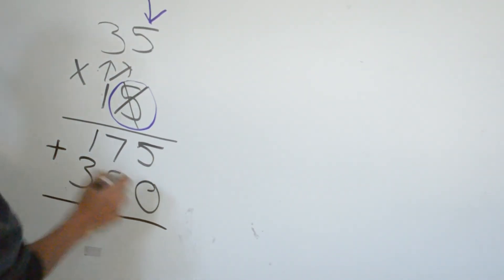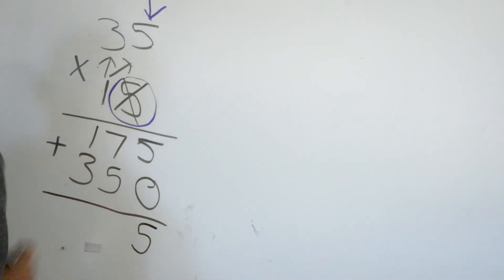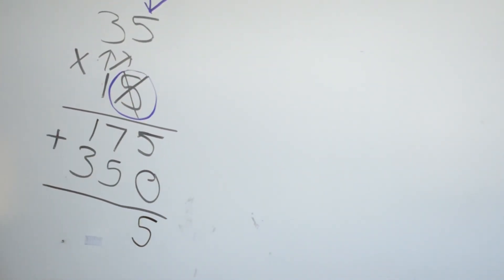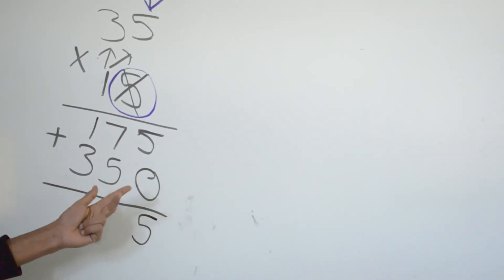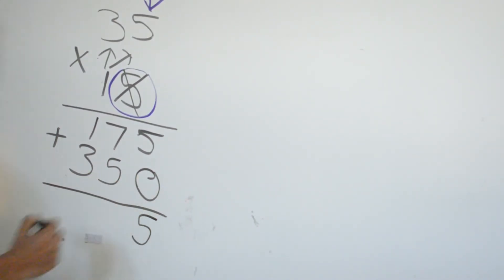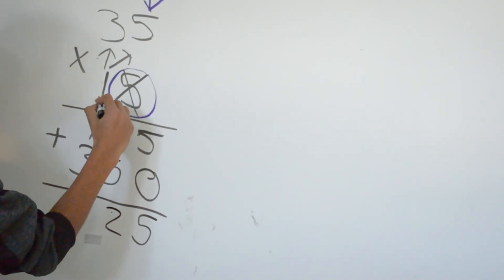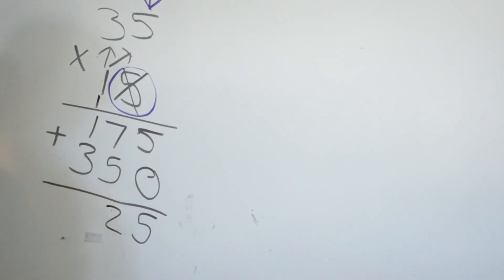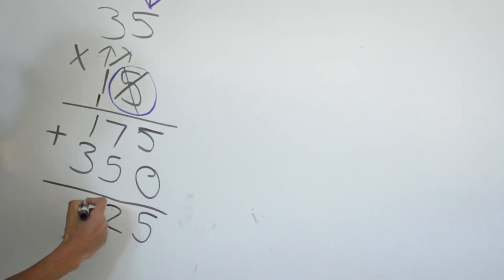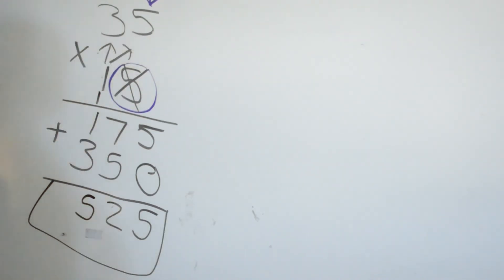5 plus 0 is 5. 7 plus 5 is 12. Carry the 1. 3 plus 1 plus 1 is 5. So our final answer is 525.